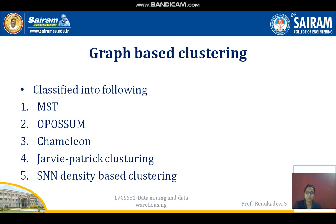The MST clustering algorithm compares with the minimum spanning tree for a dissimilarity graph — that is the first step. It then repeats the step and creates a new cluster by breaking the link corresponding to the largest dissimilarity, until only the singleton cluster remains.